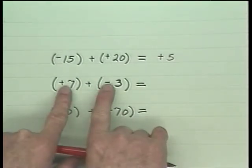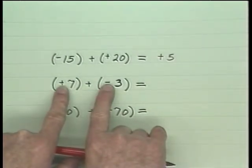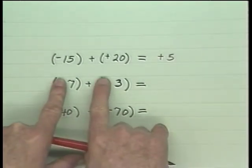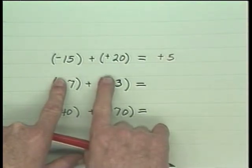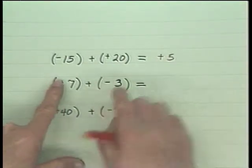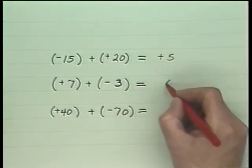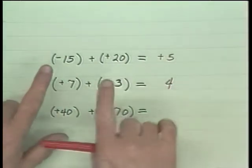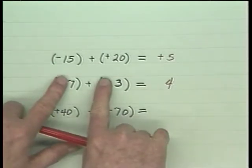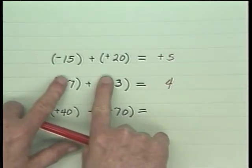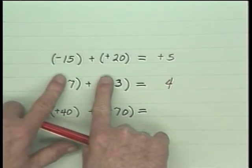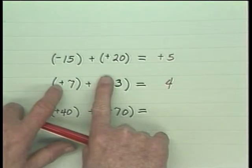Again, if adding unlike signed numbers, you take the difference between their absolute values. In this case, 3 from 7, which is 4. Then you ask which of these two has the larger absolute value — that's this one, so give it a plus.